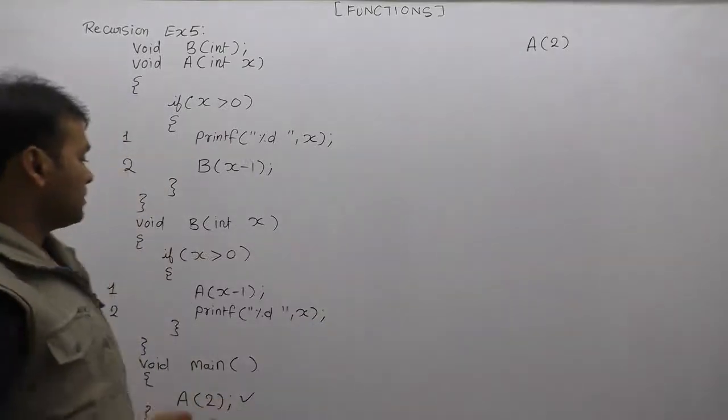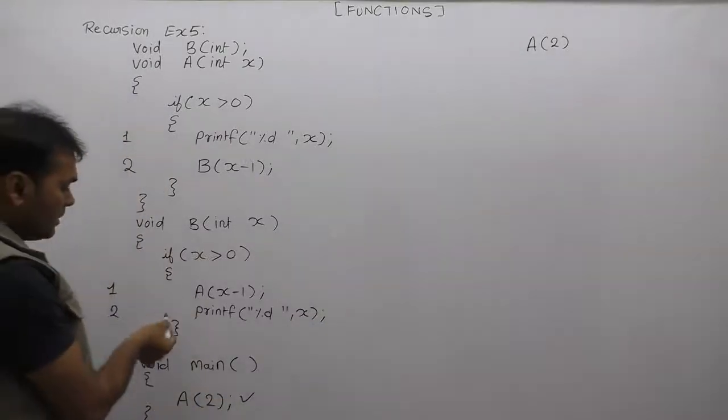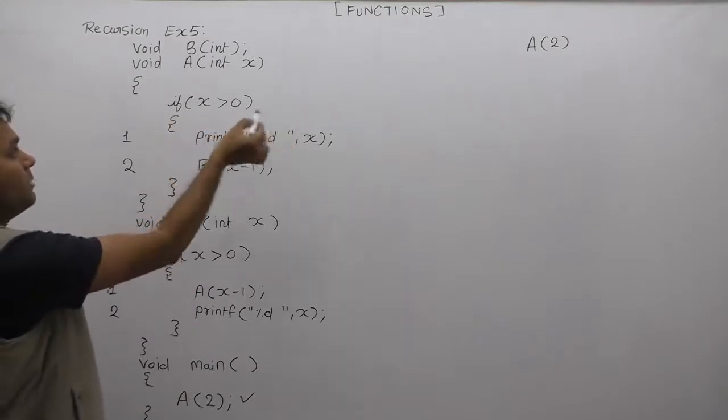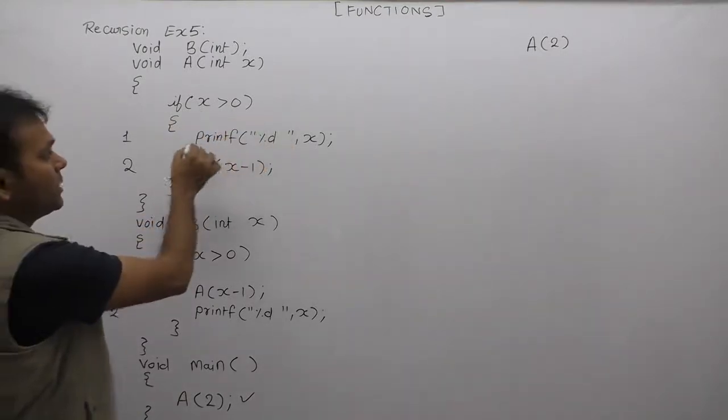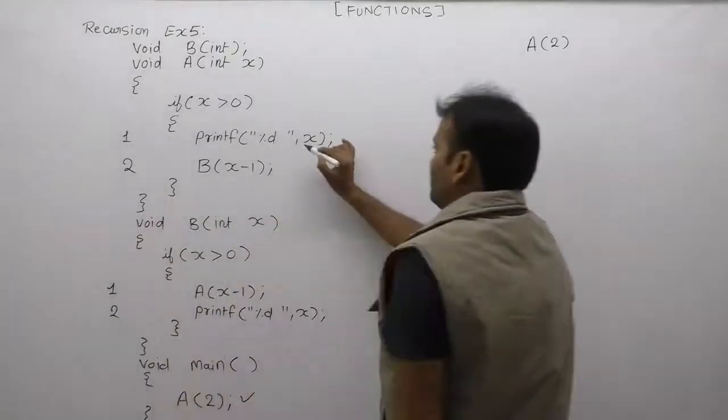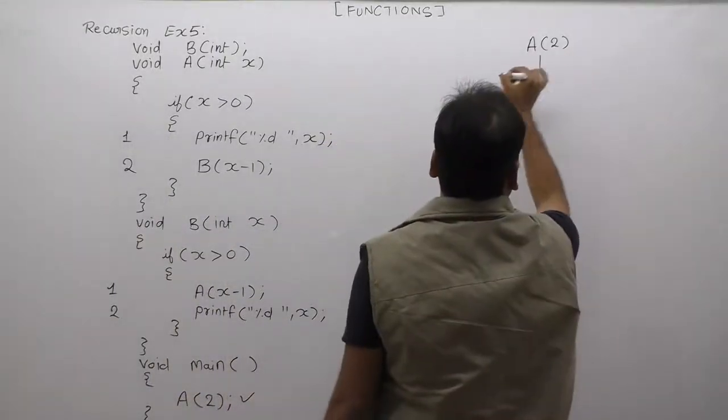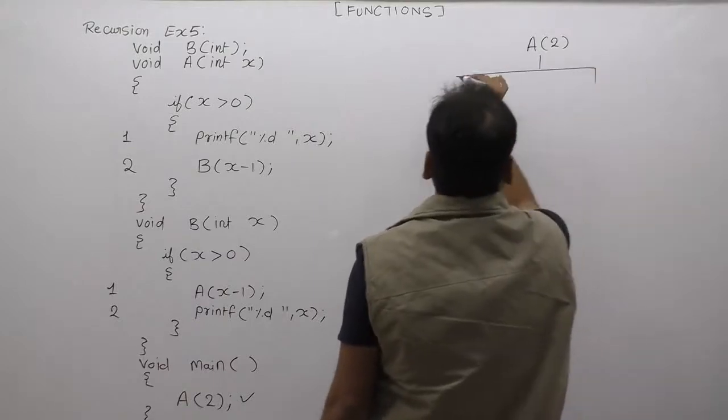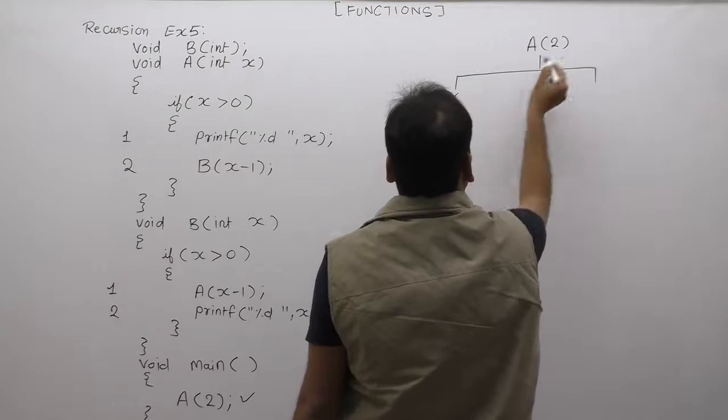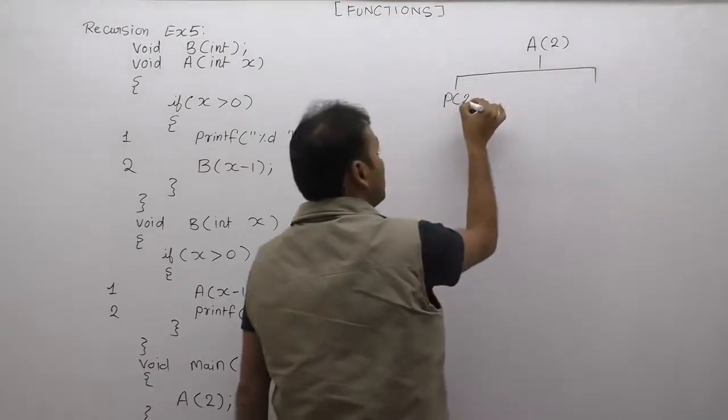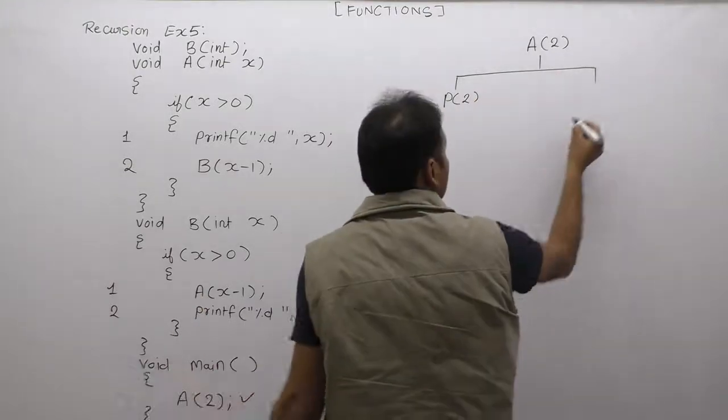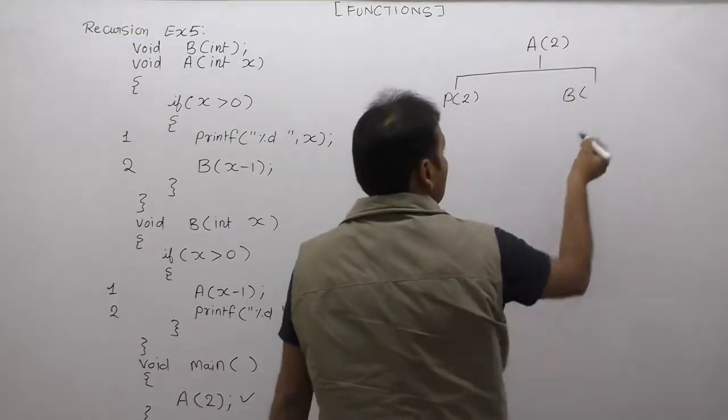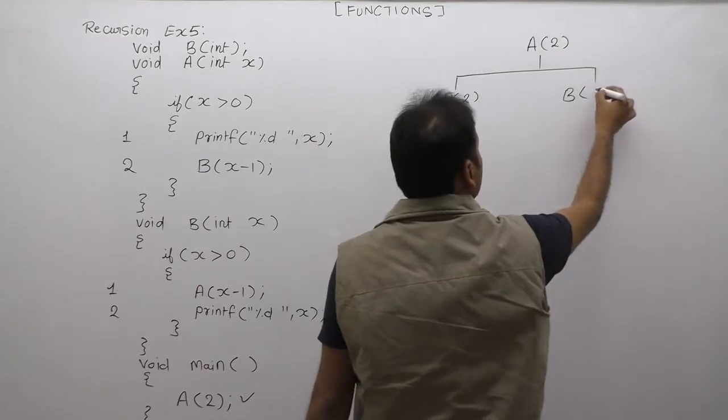For any function, we need to implement exactly two statements, one-two, one-two. First, what's happening? x value passed is 2. 2 greater than 0, condition is true, that's why we are executing two statements. First case: print x. In that case, first one print x. x value passed is 2. Second case: passing to function B. We are putting here function B. In B's case, passing x minus 1. x value is 2, so 2 minus 1 is 1.